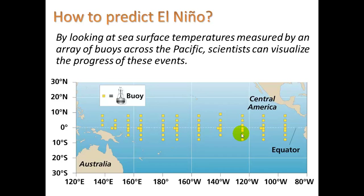So how do we predict El Niño? We look at surface temperature measured by a bunch of buoys out in the Pacific Ocean, and we look at various patterns — but that's a big part of it.